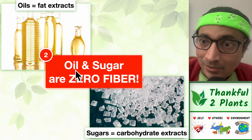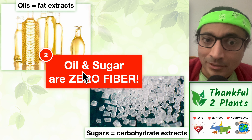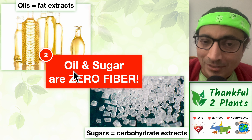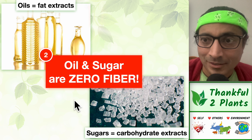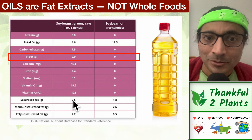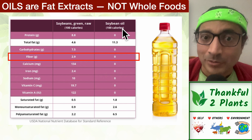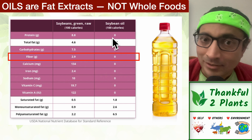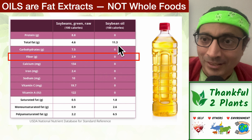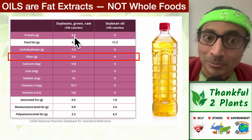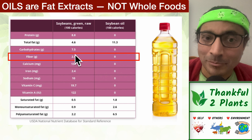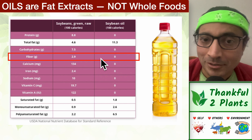Second point: extracts like oils and refined sugars have zero fiber. These are fat extracts; refined sugars are carbohydrate extracts. To illustrate, compare soybean oil with actual soybeans. Soybean oil is just fat — a fat extract. But soybeans have protein, carbohydrates, and many micronutrients including fiber, which is lost when soybeans are converted to soybean oil.